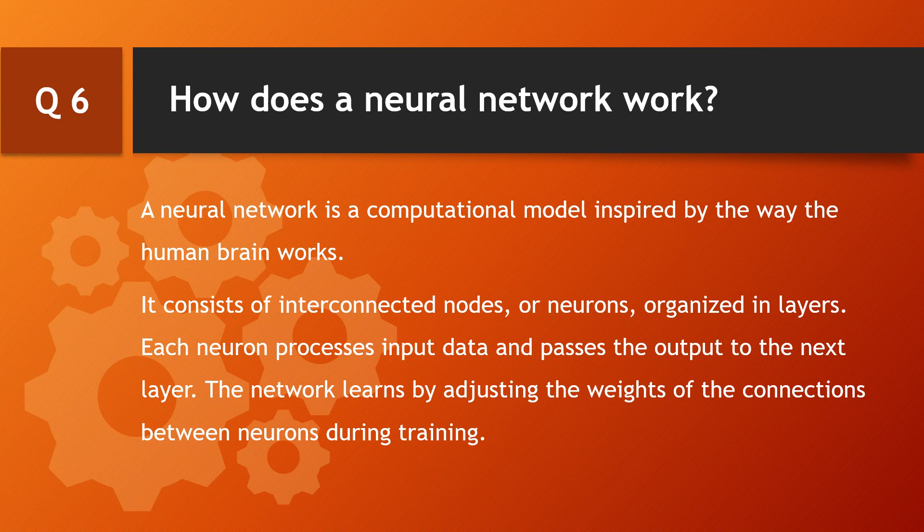Question: how does a neural network work? A neural network is a computational model inspired by the way the human brain works. It consists of interconnected nodes or neurons organized in layers. Each neuron processes the input data and passes the output to the next layer. The network learns by adjusting the weights of the connections between these neurons during training.